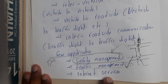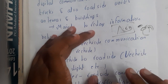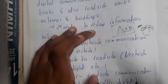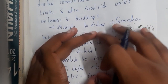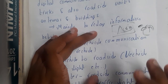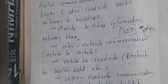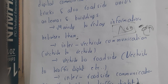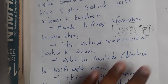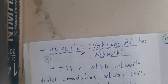VANETs also enable internet services. If your car has computational power, it indirectly connects to the internet. There is no need for a separate modem — you can use your vehicle as a hotspot, connect your mobile to it, and use the internet. In this way, the vehicle also functions as a movable computer.